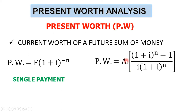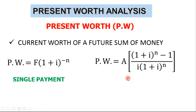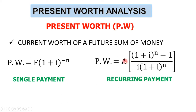The second equation is used when you have a series of payments as A. This is done when the payment is made every year. To speed up the calculation, this equation summarizes or adds all the series of payments every year, and using this one equation, we can determine the present worth of the recurring payment.